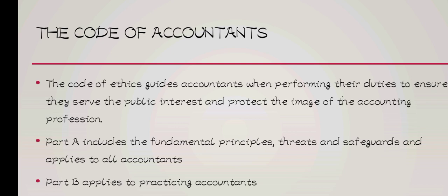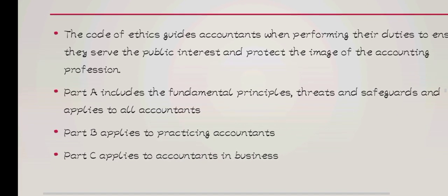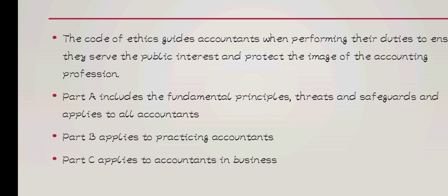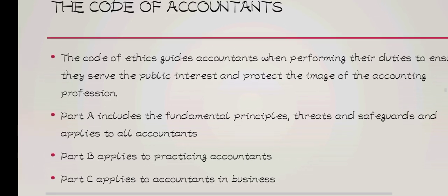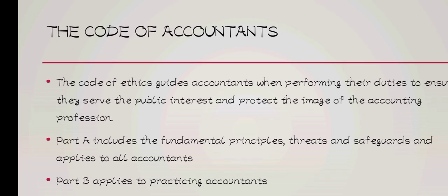The code has three parts. Part A covers the fundamental principles, the threats, and the safeguards to the threats — and this applies to all accountants. Part B applies to practicing accountants, and Part C applies to accountants in business. Mainly we are going to look at Part A: the fundamental principles, the threats, and the safeguards.